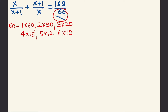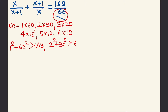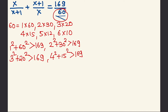The next step is to find the sum of squares of each factor pair such that their sum equals 169. Checking: 1²+60² is greater than 169; 2²+30² is also greater than 169; 3²+20² is also greater than 169; 4²+15² is also greater than 169.